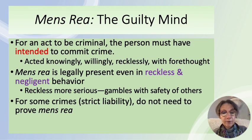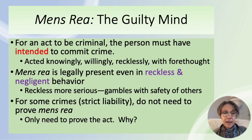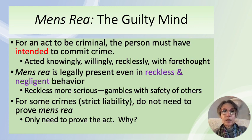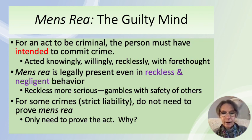For some crimes — called strict liability crimes — you don't need to prove mens rea. You only need to prove the person engaged in the act. A good example is statutory rape: an adult having sex with someone underage. The accused might claim they didn't know the person was underage, but as a deterrent, the act itself is enough for prosecution. Similarly, selling cigarettes or alcohol to a minor doesn't require proving intent.